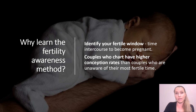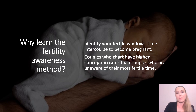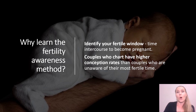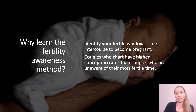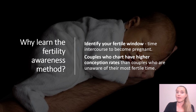They assume day 14 is when they're fertile and that's when they're having intercourse. But they may be ovulating much earlier, at around day 6 or 7, or much later, at around day 21 or 22. If they're not having intercourse during the time when ovulation is occurring, there won't be a pregnancy.